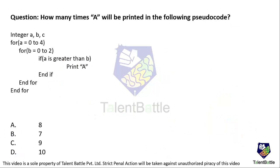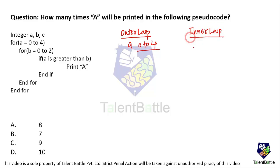Let's move to the next question. How many times will 'a' be printed in the provided pseudocode? A nested for loop is given. The outer for loop has a from 0 to 4, and the inner for loop has b from 0 to 2. For each iteration of the outer loop, the inner loop executes all its valid cases. Inside the inner loop, if a is greater than b, we print a. We need to count how many times a is printed.